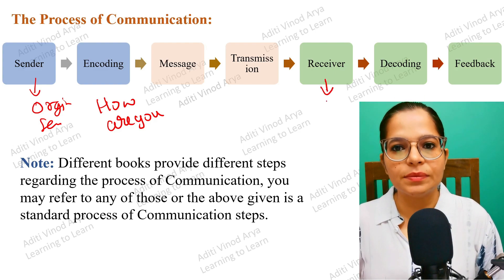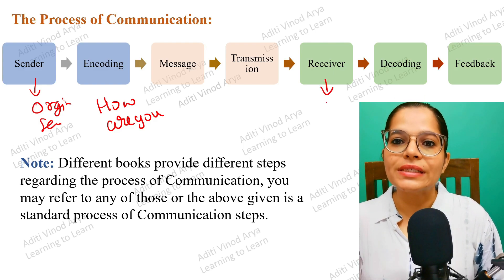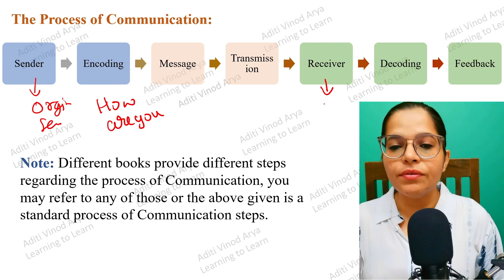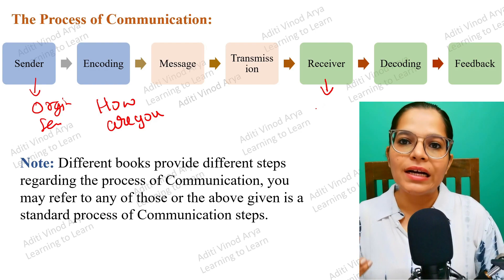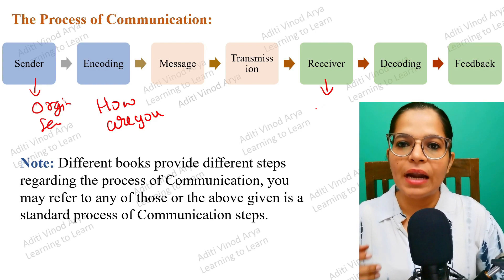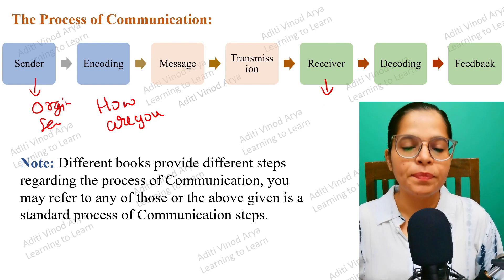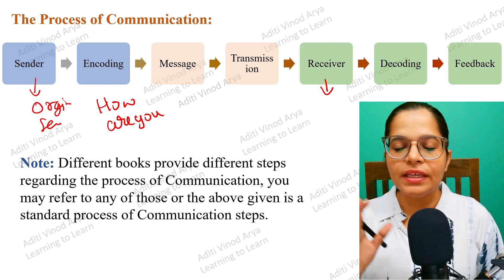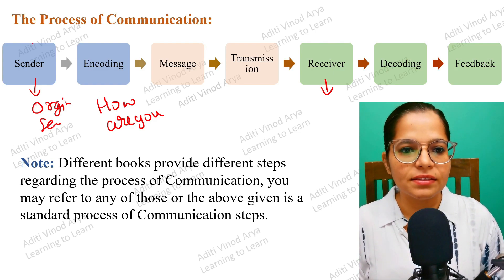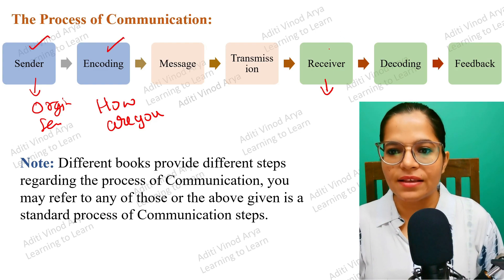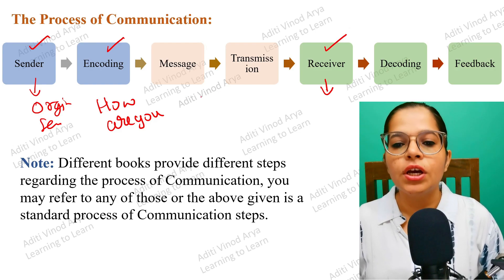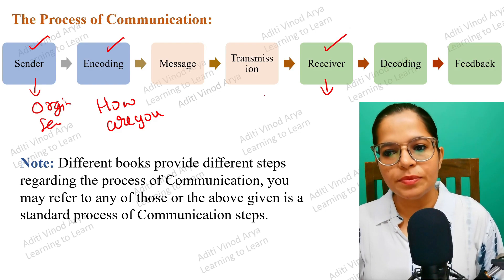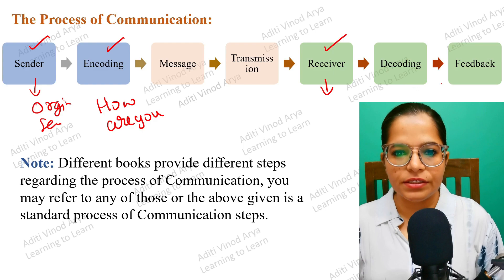The Receiver is the person who receives the message. The main responsibility of the receiver is to collect the message, understand it, and provide feedback to the sender. So those three points — Sender, Encoding, and Receiver — have been completed. Now let's talk about Message, Transmission, Decoding, and Feedback in detail.